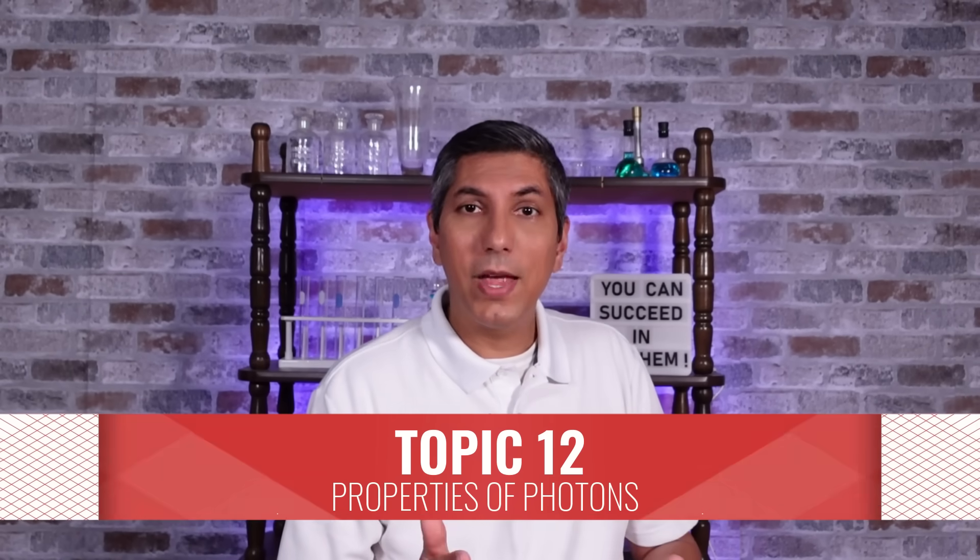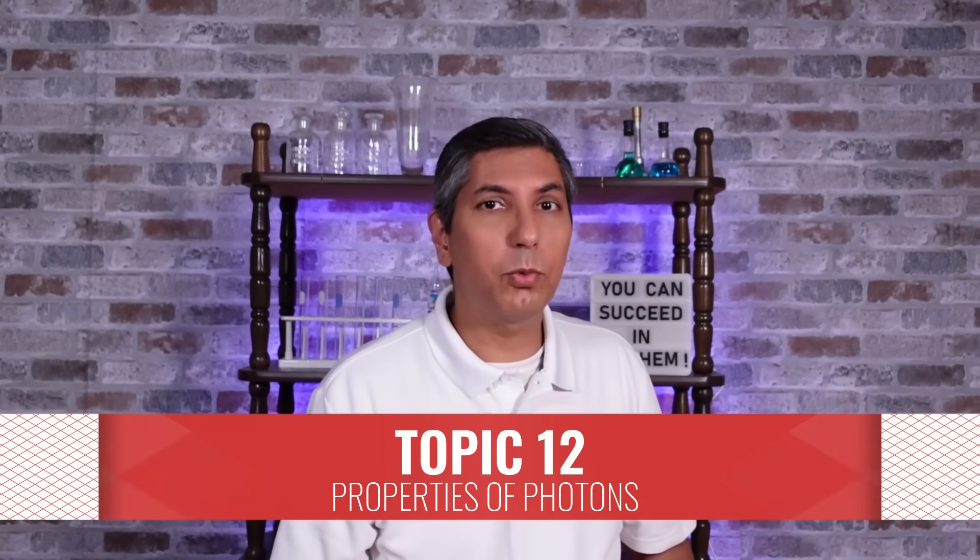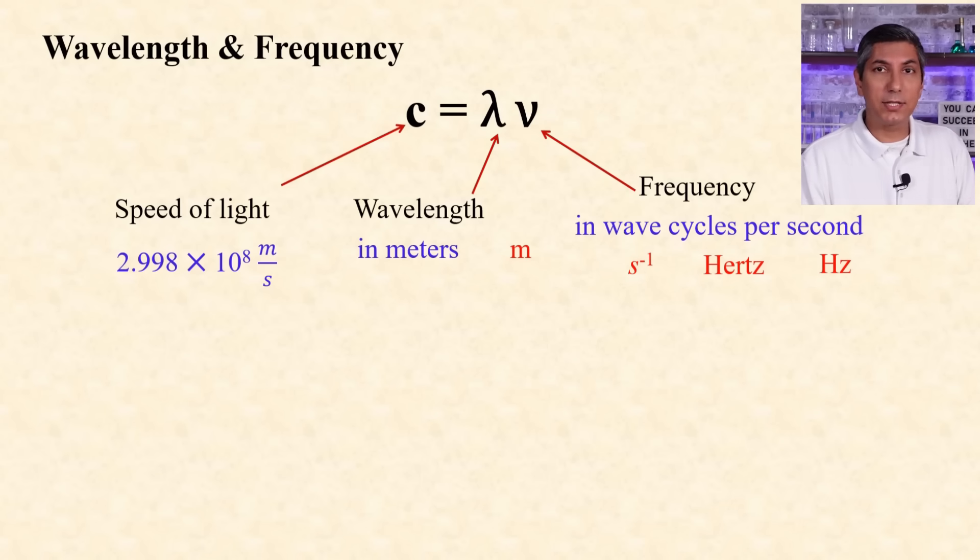Light has a dual nature. It can act as a wave, and it can act as a packet of light, which we call a photon. We can calculate the energy of these photons of light. Use the equation c equals lambda nu, where c is the speed of light, around 3 times 10 to the 8 meters per second, lambda is the wavelength in meters, and nu is the frequency in hertz. If you know the wavelength or the frequency, you can figure out the other one.